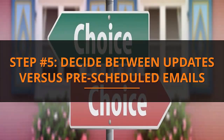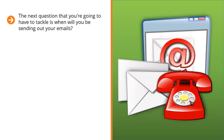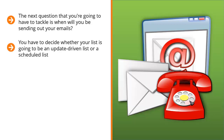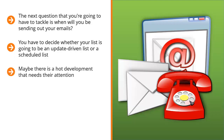Step number five: decide between updates versus pre-scheduled emails. The next question you're going to have to tackle is when will you be sending out your emails. Your squeeze page sets up your list members' expectations. If you do things right, your list members should not be surprised that you're sending out emails to them. You have to decide whether your list is going to be an update-driven list or a scheduled list. People who sign up for update-driven lists expect emails to come at any time — maybe there's late-breaking news in your niche, or a hot development that needs their attention. People who sign up for such lists expect updates to come at any time; in fact, they wouldn't mind receiving several emails within a day.